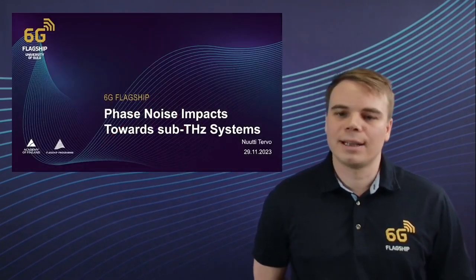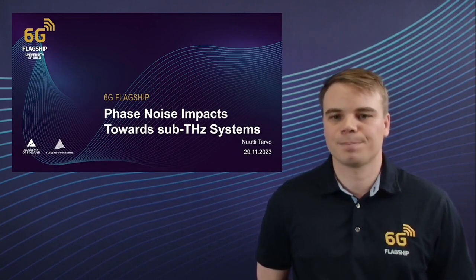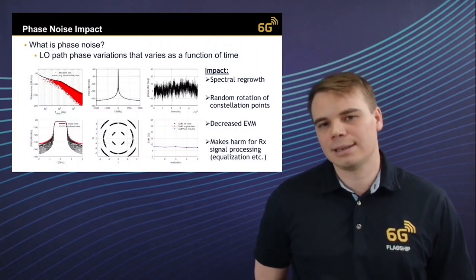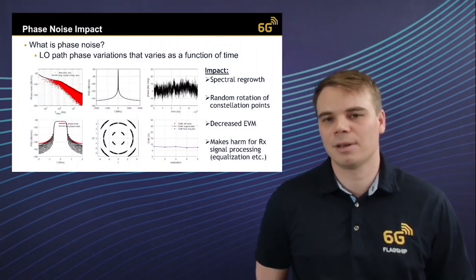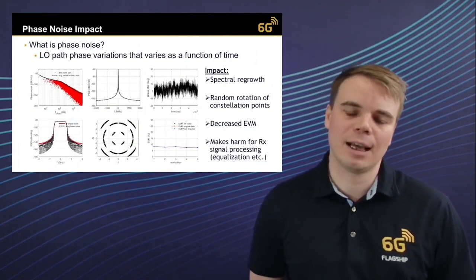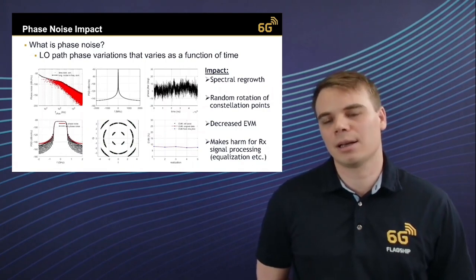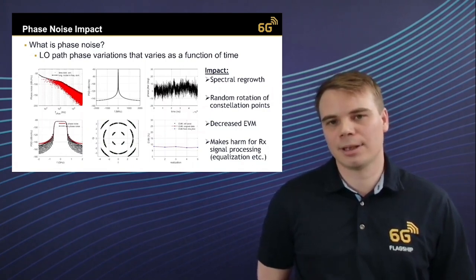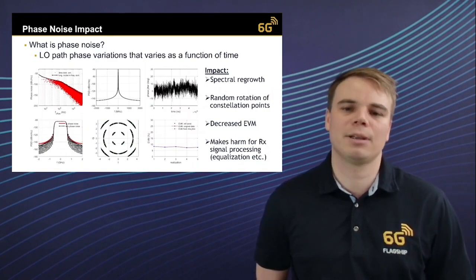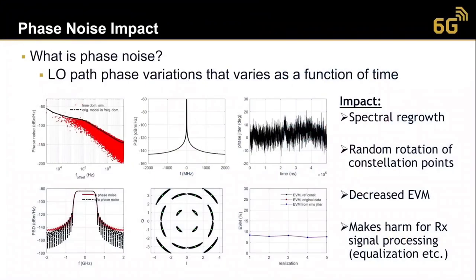Let's look in more detail at phase noise and its impact towards higher-frequency systems. Phase noise is local oscillator phase variation as a function of time, and it's not fully random like Gaussian — each phase value is very dependent on the previous phase value, so it has memory. This phase noise causes rotations of constellation points in the modulation. It also causes spectral regrowth, decreases signal quality in terms of EVM, and harms receiver signal processing such as equalization and synchronization, which in turn decreases signal quality.